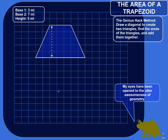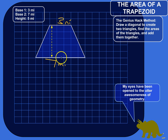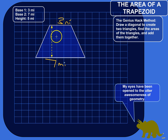I've got a trapezoid here with one base that is three miles long and the other base is seven miles. A trapezoid is just a figure with two parallel sides — these two parallel sides are called the bases. This one is seven miles long, and the height of the trapezoid is five miles.